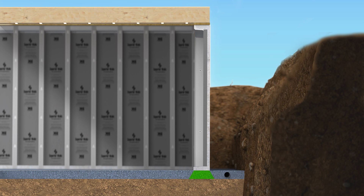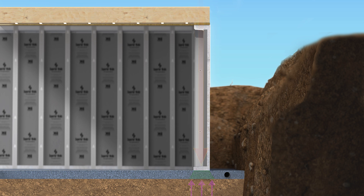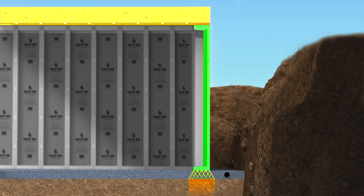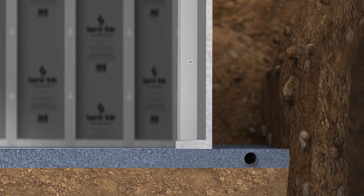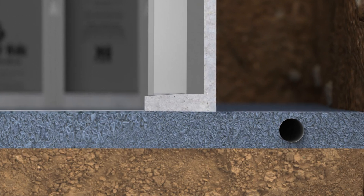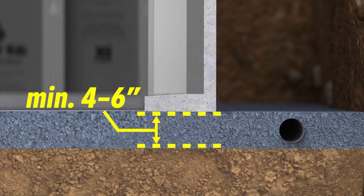The purpose of any footing is to distribute a load over a sufficient area of soil so that the weight bearing capacity of the soil is not exceeded. The load of a structure is carried by the Superior Walls panel and is transferred to the underlying soil through the clean crushed stone footing. A minimum crushed stone footing depth of 4 to 6 inches is specified to provide the depth required for proper drainage and the placement of the drainage pipe.